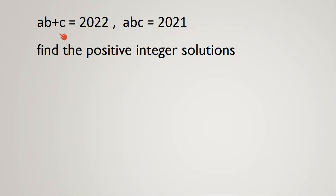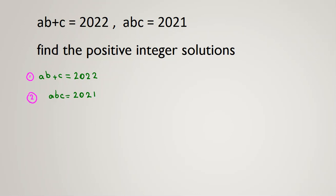We want to find A, B, and C. Let's rewrite these two equations. The first equation: A·B plus C equals 2022. The second equation: A·B·C equals 2021.